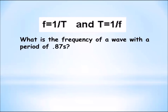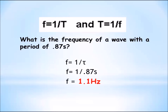Alright, if you're back — what is the frequency of a wave with a period of 0.87 seconds? We know the period of this wave: it's 0.87 seconds. And the frequency is the inverse of the period. So the frequency is 1 divided by 0.87 seconds, and that gives us a frequency of 1.1 Hertz.